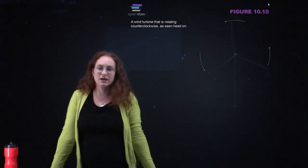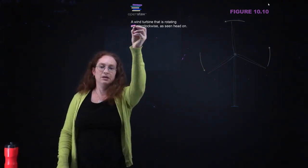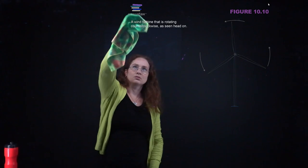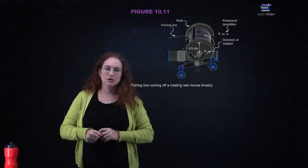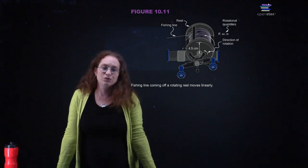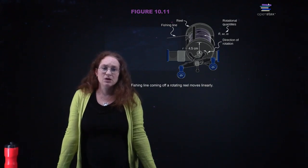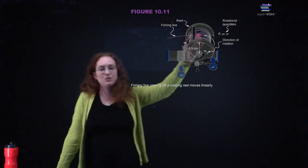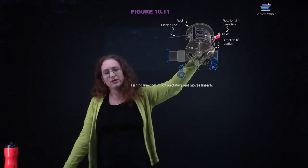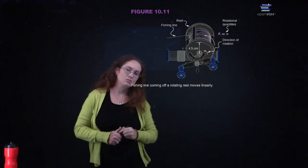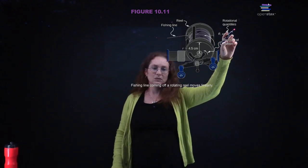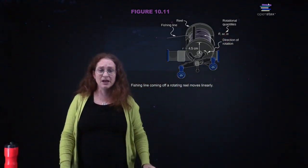A wind turbine is rotating clockwise as seen from head on — so you guys see this rotating clockwise. Fishing line coming off of a rotating reel moves linearly, so if it's unwinding at a constant speed, your theta is changing with a constant angular velocity omega, and if it's moving at a constant angular speed, alpha is equal to zero.